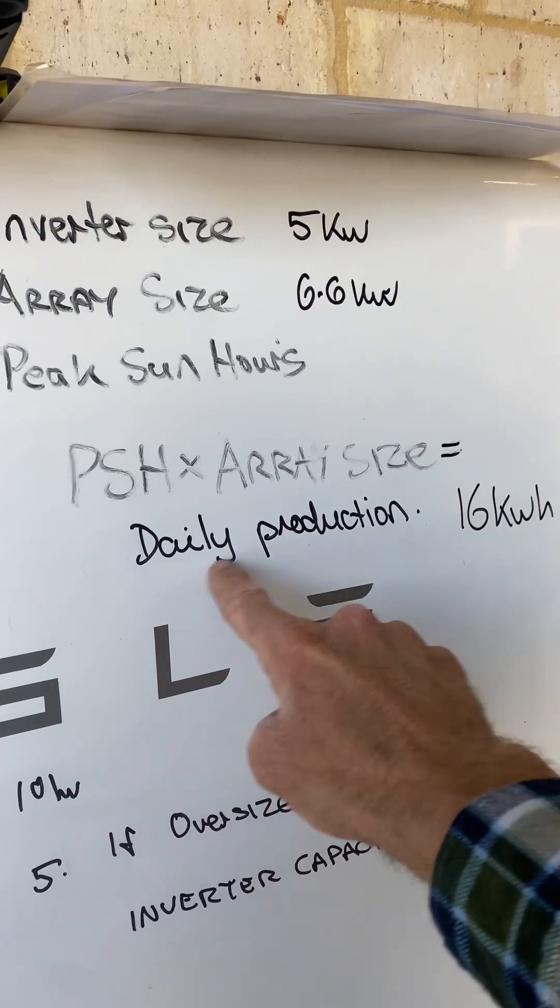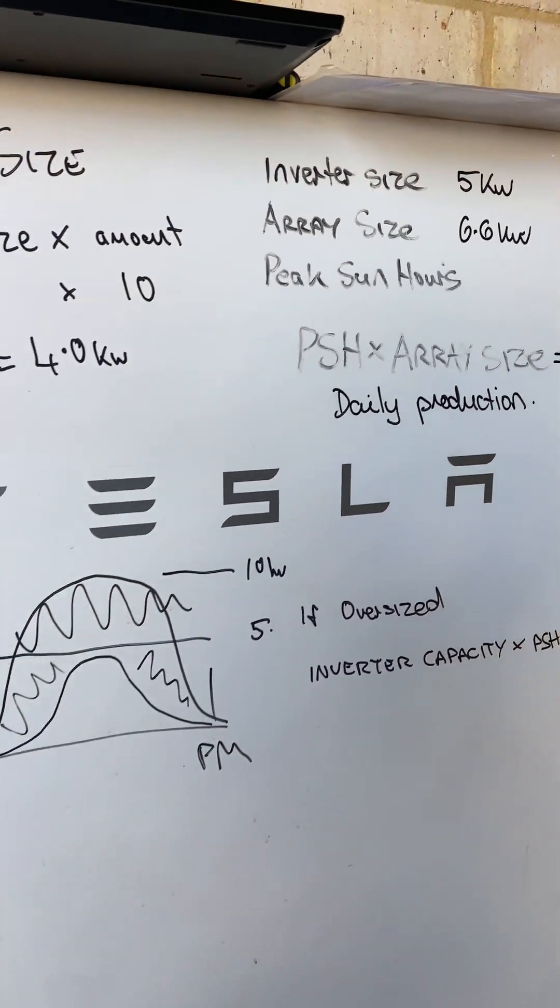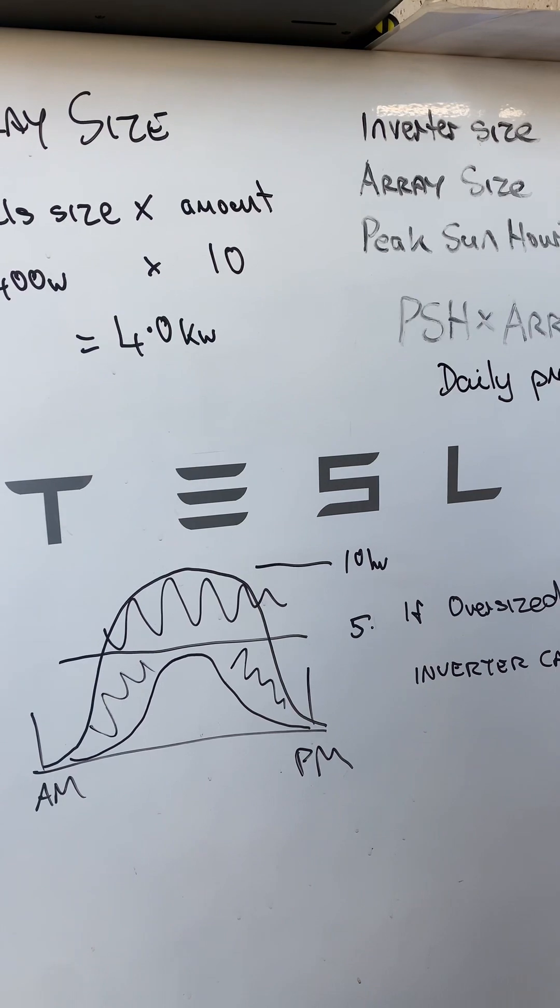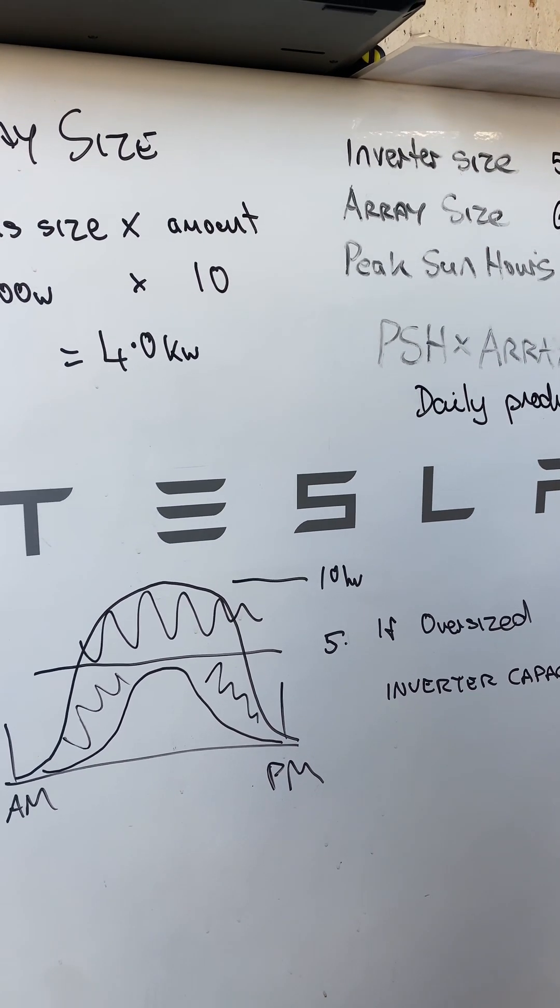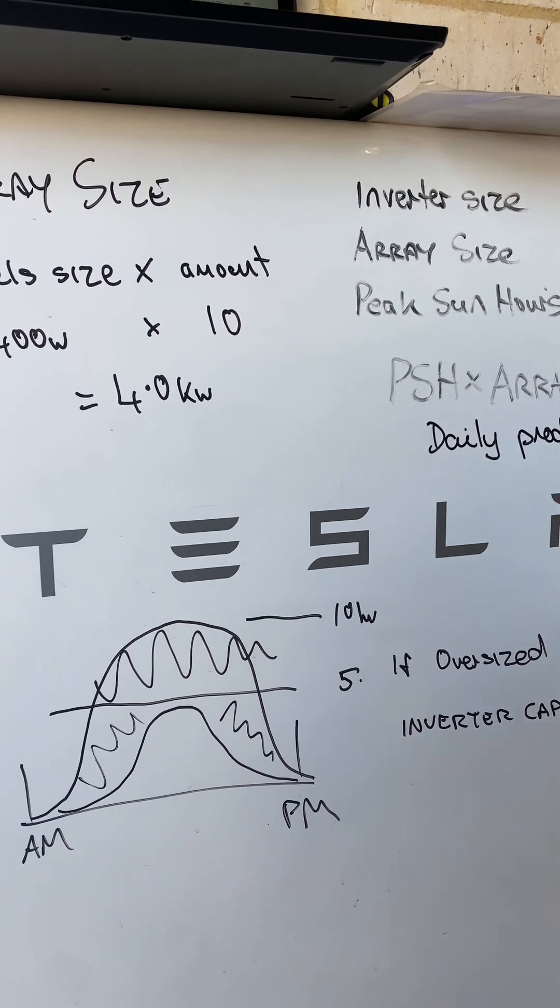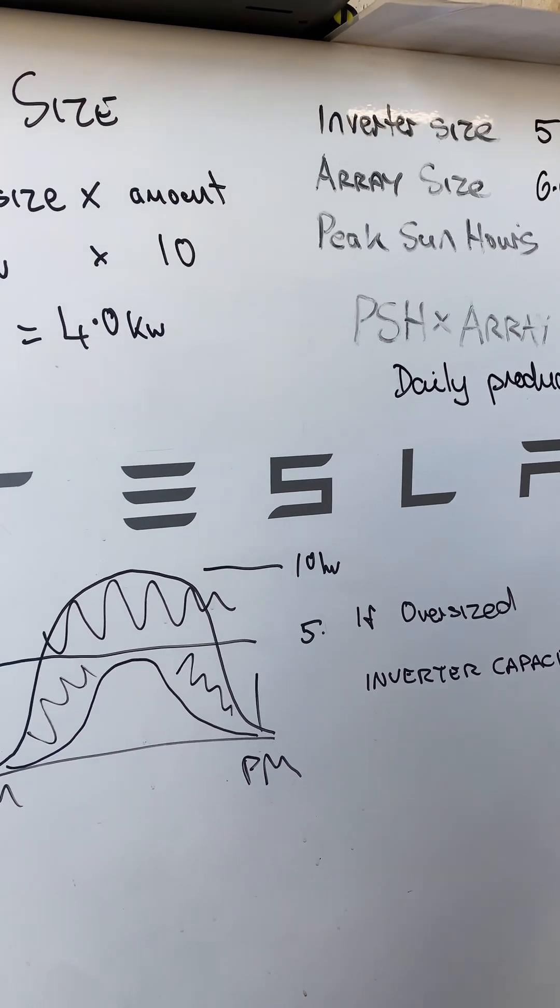The one we're interested in is the daily production. And you want to get that just before your inverter shuts down of an evening, because obviously that's accumulating during the day and we need that figure.